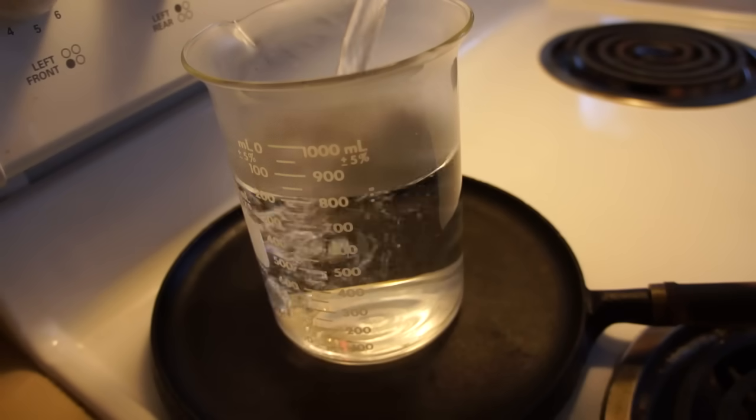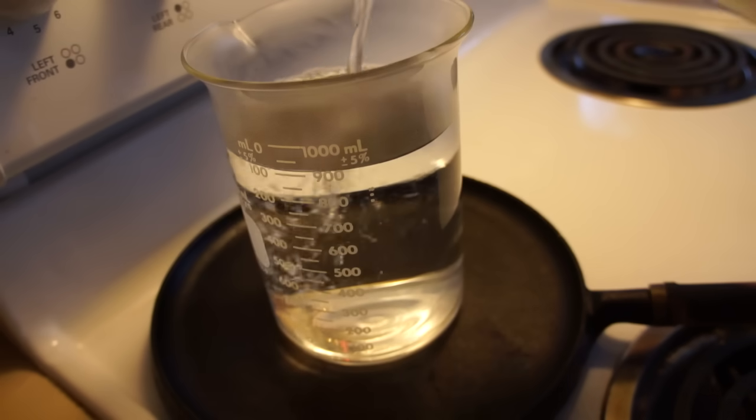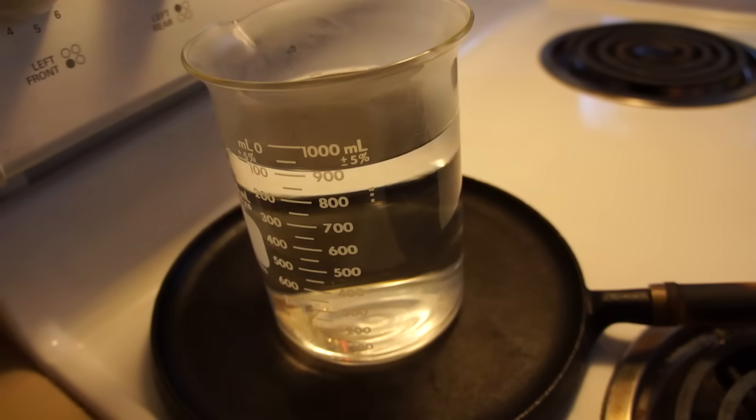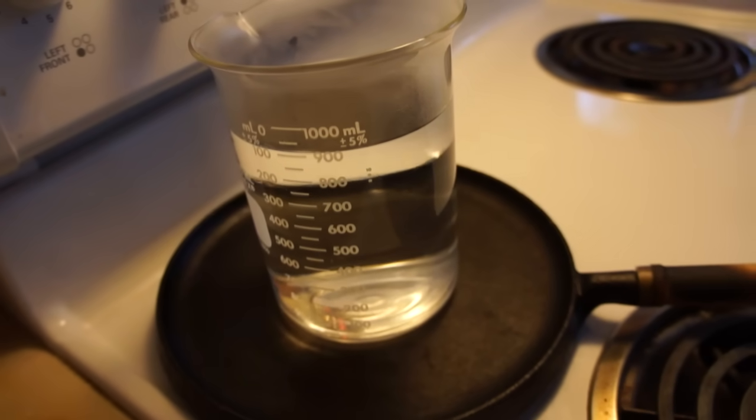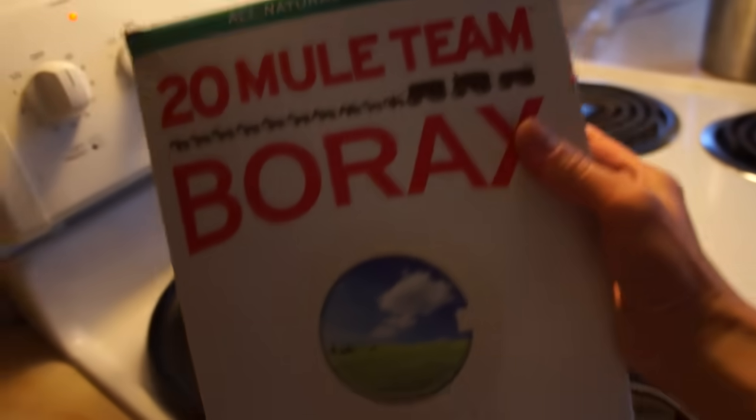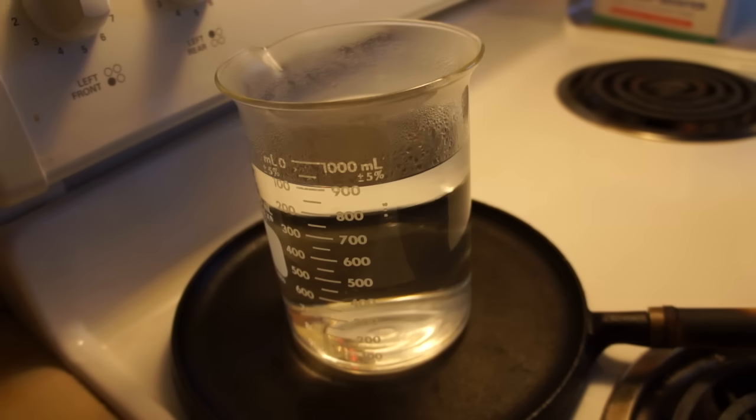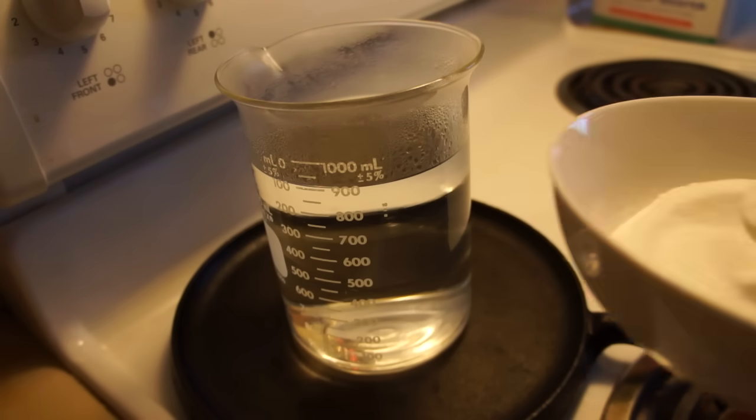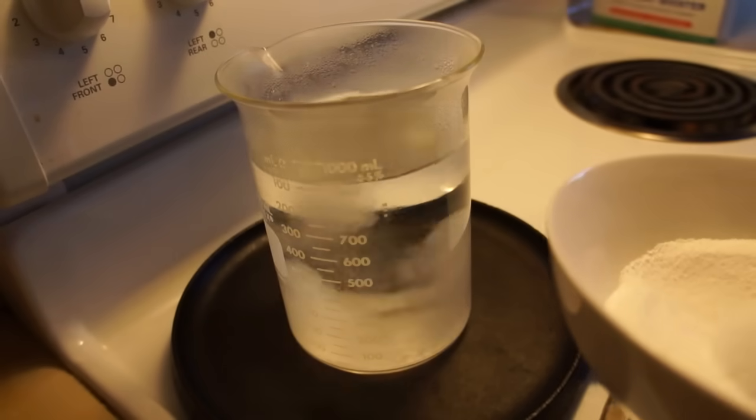So the secret of getting really fat crystals is making a really supersaturated solution. So the way to do that is to have some really hot water, and you're going to want to actually get it boiling. And then you're just going to add borax. You can find borax in the laundry section at your big box store. So you're going to add borax to your boiling water.